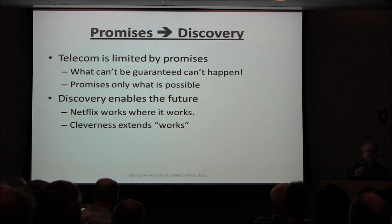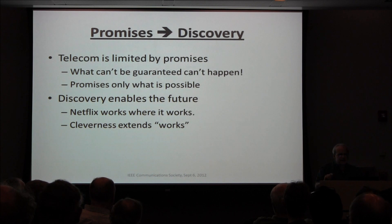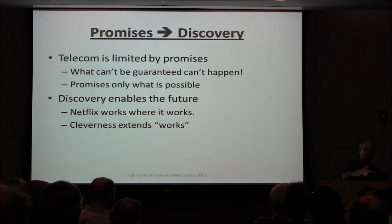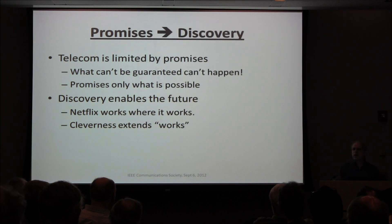Cleverness extends what works. DSL failed competing with interactive TV 25 years ago, but today Netflix can run video over less than many DSL lines — because we have powerful computers, clever algorithms, and we know how to do it. So we don't rely on a third party; we're extending our range by being clever.